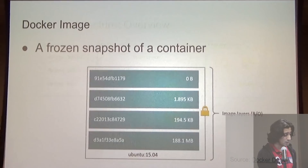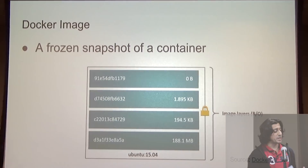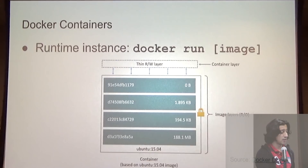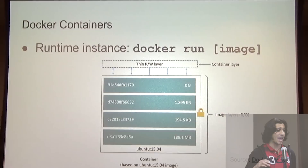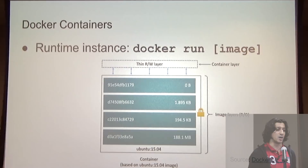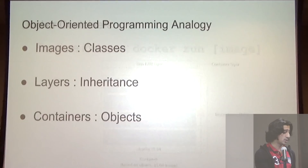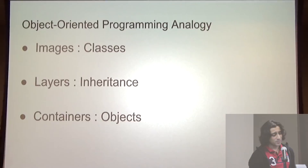An image is a frozen snapshot of a container. Each image consists of a set of read-only layers stacked on top of each other, where each layer is the set of differences from the layer below it. Containers are the runtime instance — when we create a container, we add a thin read-write layer called a container layer to the top of our image layer stack. Any time we add, modify, or delete a file, that happens in the top container layer. This is really similar to object-oriented programming: images are like classes, layers are akin to inheritance, and containers are runtime instances just like objects are runtime instances of a class.